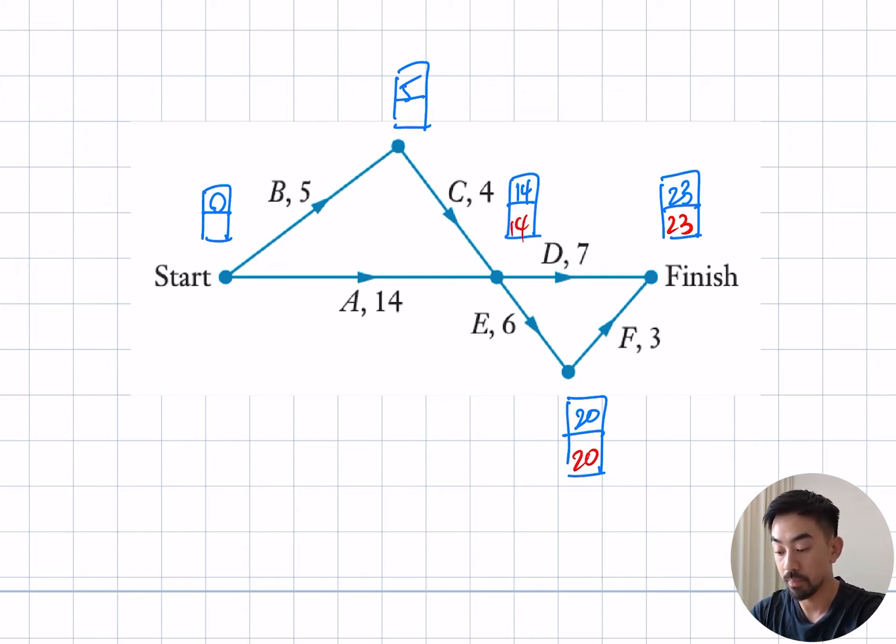Going up here, 14 minus 4 is 10. And then going back to the starting node, I've got 14 minus 4 or 10 minus 5. It has to be 14 minus 14 because that's 0. So to highlight my critical path, it looks like it's going to go from here to here, and then down and then up here. And that's my critical path.